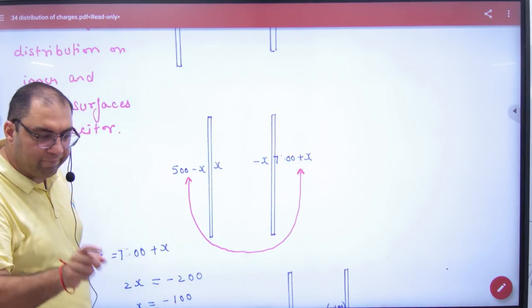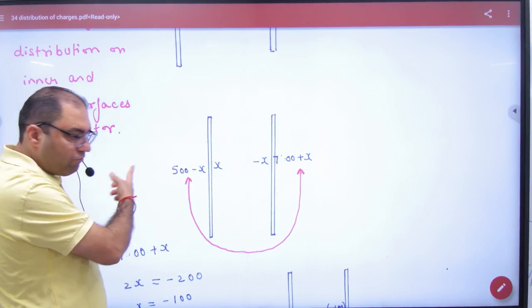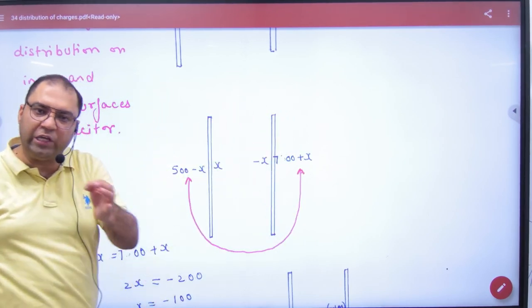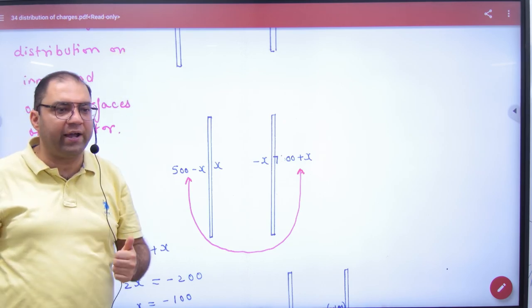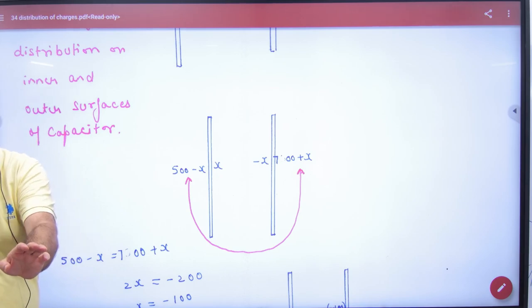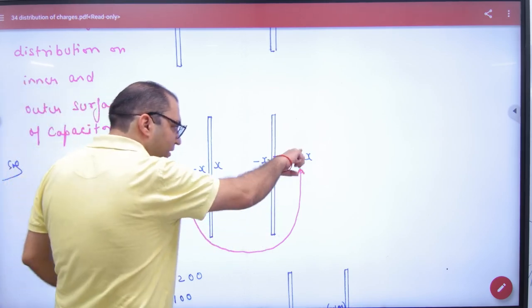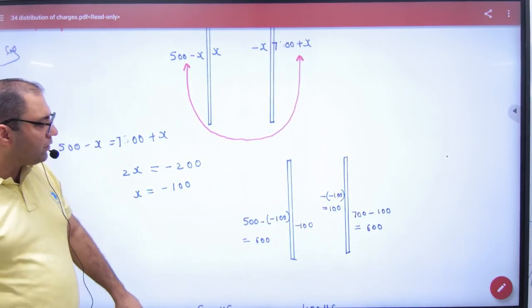A shortcut is that the corner charges, right extreme and left extreme, those charge values are always equal. Now how did I prove this result? That's the proof. So let's equate these charges. Charges equate and x will be minus 100. So now you can give the answer.